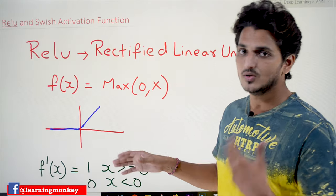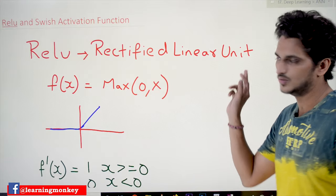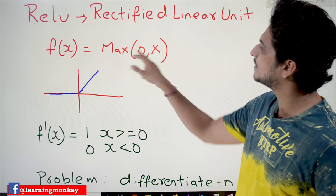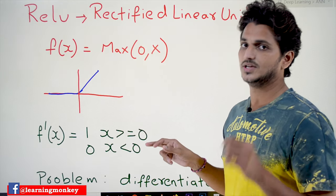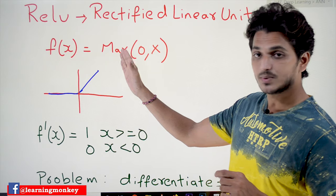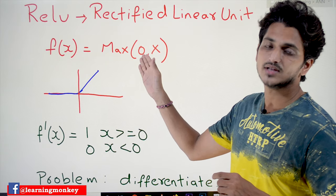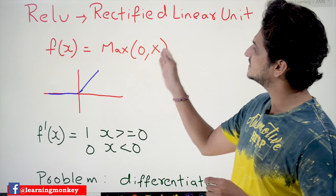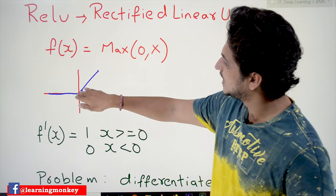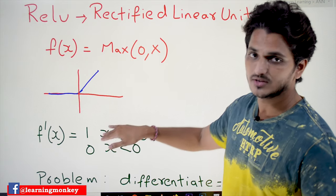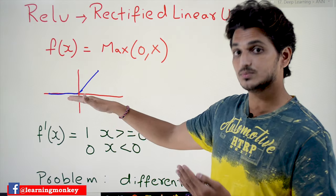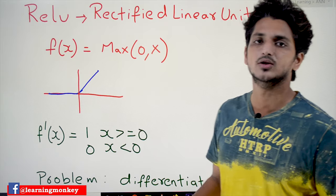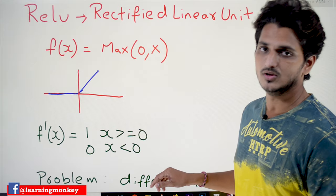Let's check what is meant by the ReLU activation function. ReLU is Rectified Linear Unit, and the function is given as f(x) = max(0, x). If the x value is a negative value, we consider the maximum of 0 and x, meaning we consider 0 as the output. If x is a positive value, our function gives x as it is. On the positive side, the x value is given as it is. On the negative side, if x is negative, the maximum of 0 and x means we take 0. This is how our ReLU activation function looks.